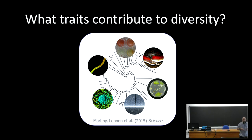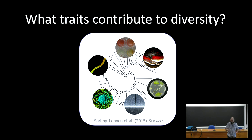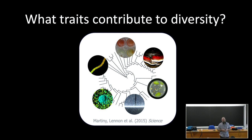When we start to ask questions about the maintenance of biodiversity — why there are so many species coexisting in a gram of soil, a liter of seawater, or in our guts — there are multiple explanations and theories. Many of those theories tend to focus on the differences among species, which we can characterize as traits: the physiological, morphological, or behavioral characteristics of an individual that influence its performance or fitness in a given set of environmental conditions.